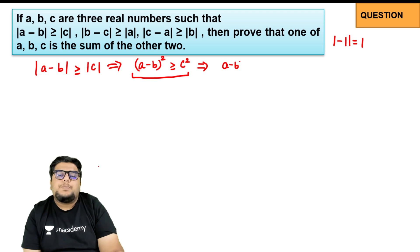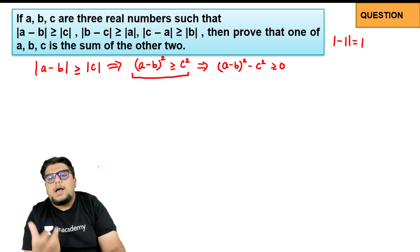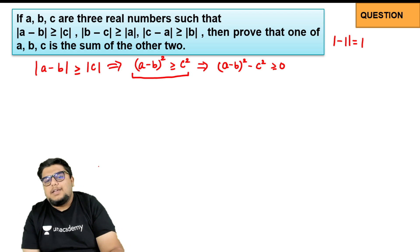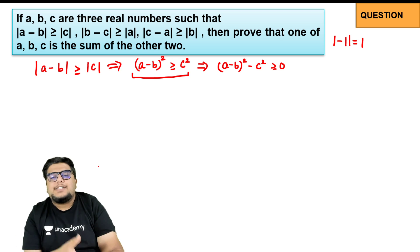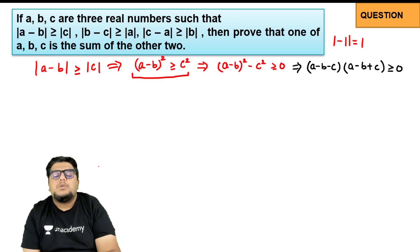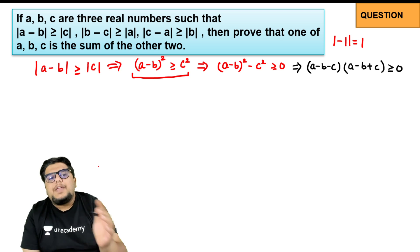Now I take c squared to the other side: (a minus b) whole square minus c squared is greater than or equal to zero. Applying the identity a² minus b² equals (a minus b)(a plus b), I factor this as (a minus b minus c) times (a minus b plus c) greater than or equal to zero.